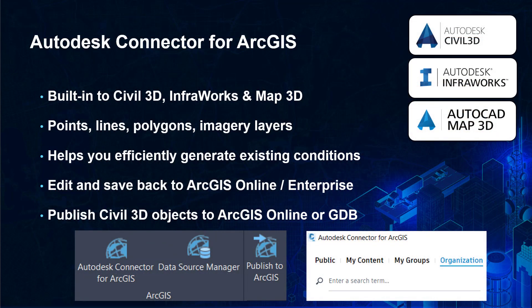The Autodesk Connector for ArcGIS is built into Civil 3D, InfoWorks, and AutoCAD Map 3D. It also allows you to bring in points, lines, and polygons and imagery layers stored in ArcGIS Online or ArcGIS Enterprise. It excels at helping you generate existing conditions on a project site, and it also includes the ability to make edits to GIS data and save it back to ArcGIS Online.